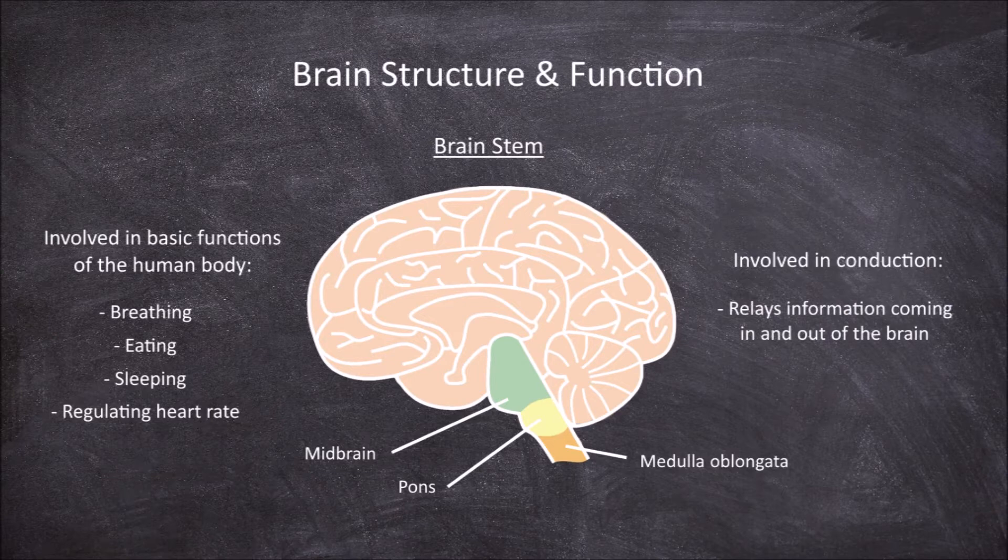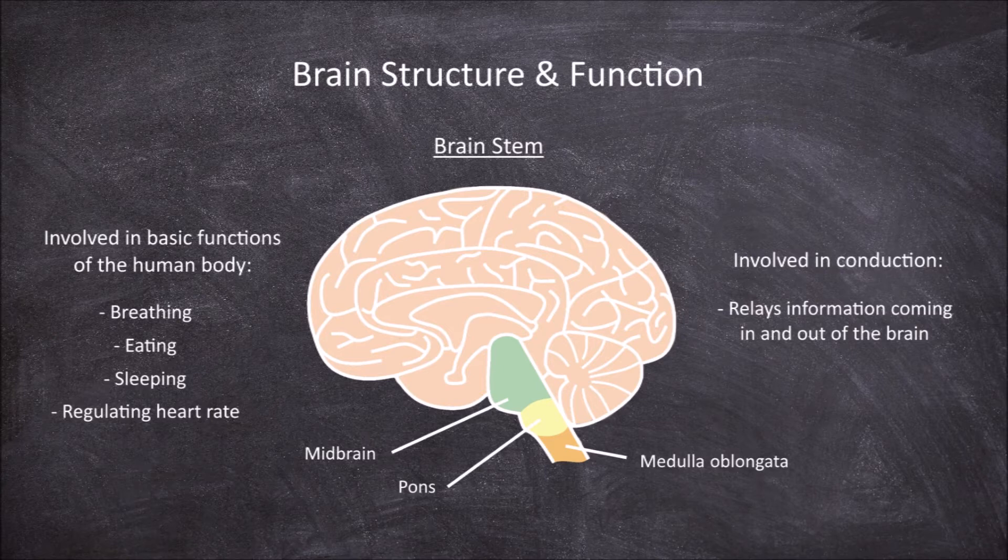This is because all the sensory information coming in from the ascending pathways around the body going to the other parts of the brain must go through the brain stem, and all the motor information going from the other parts of the brain out through the descending pathways must all go through the brain stem.